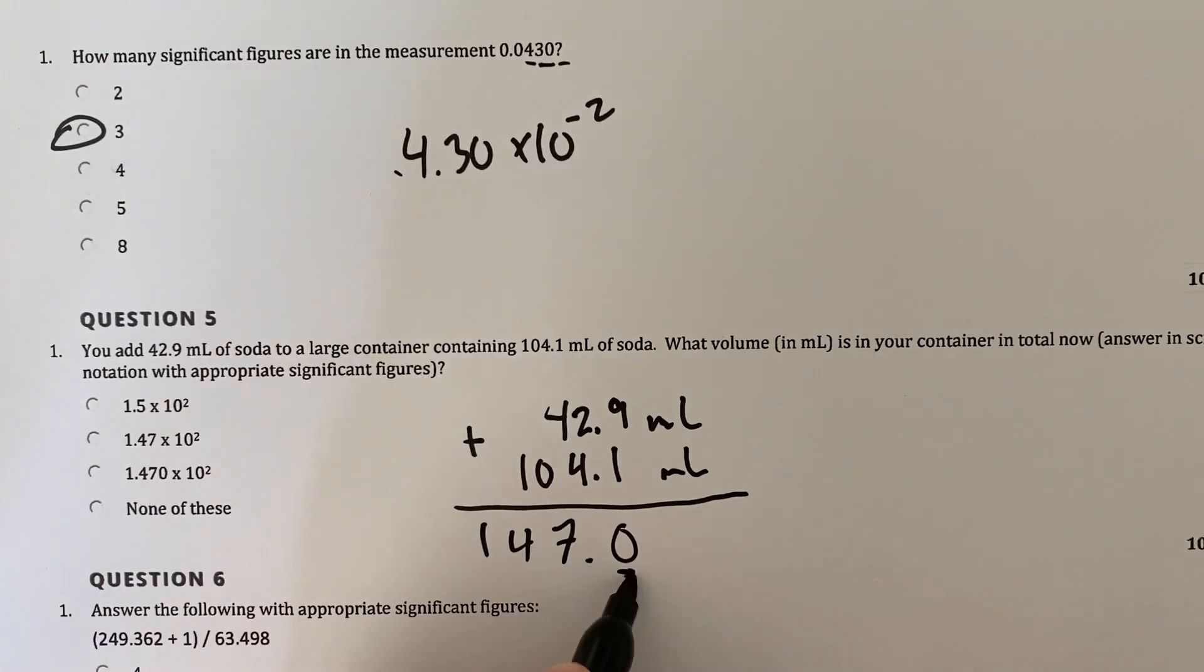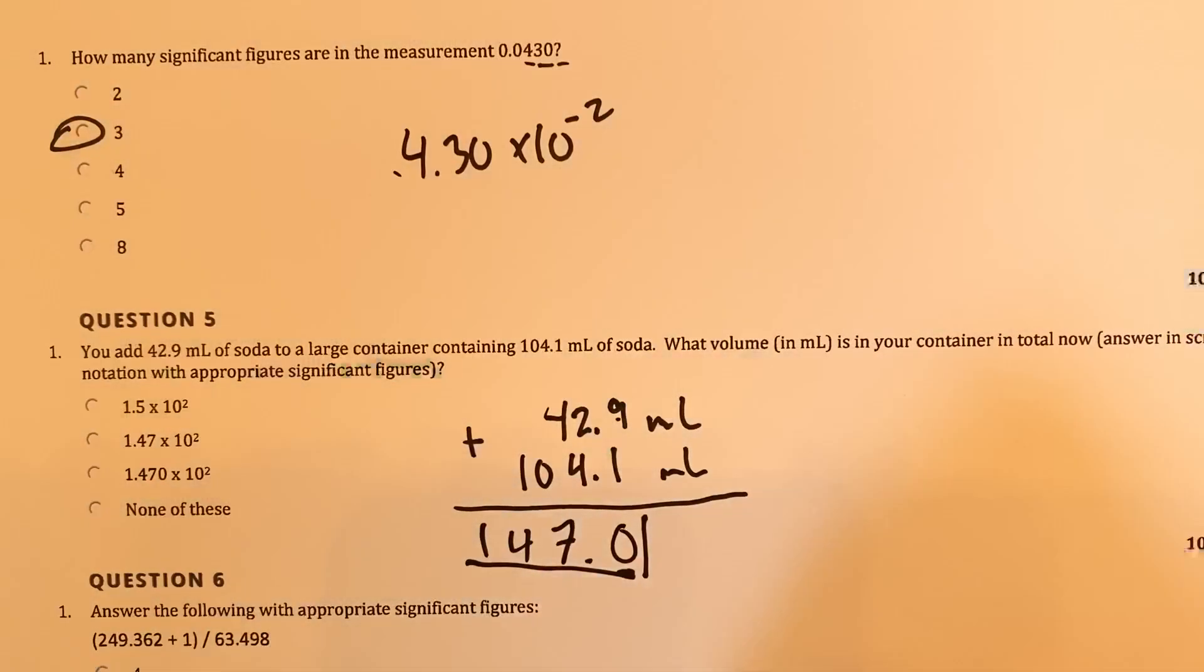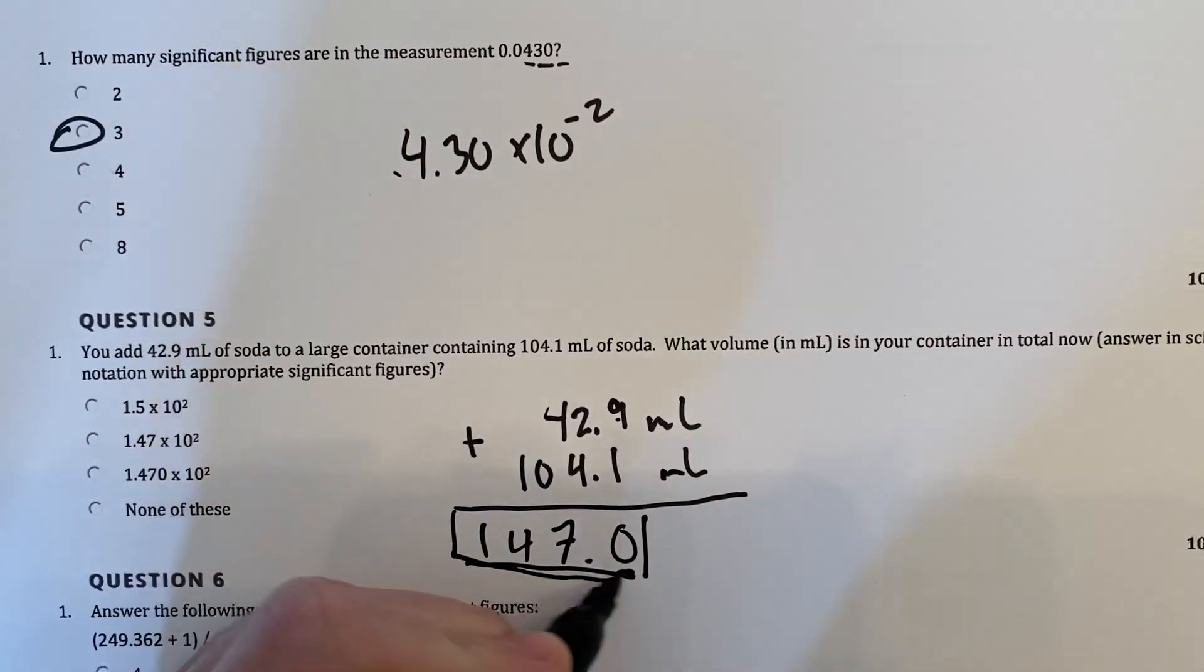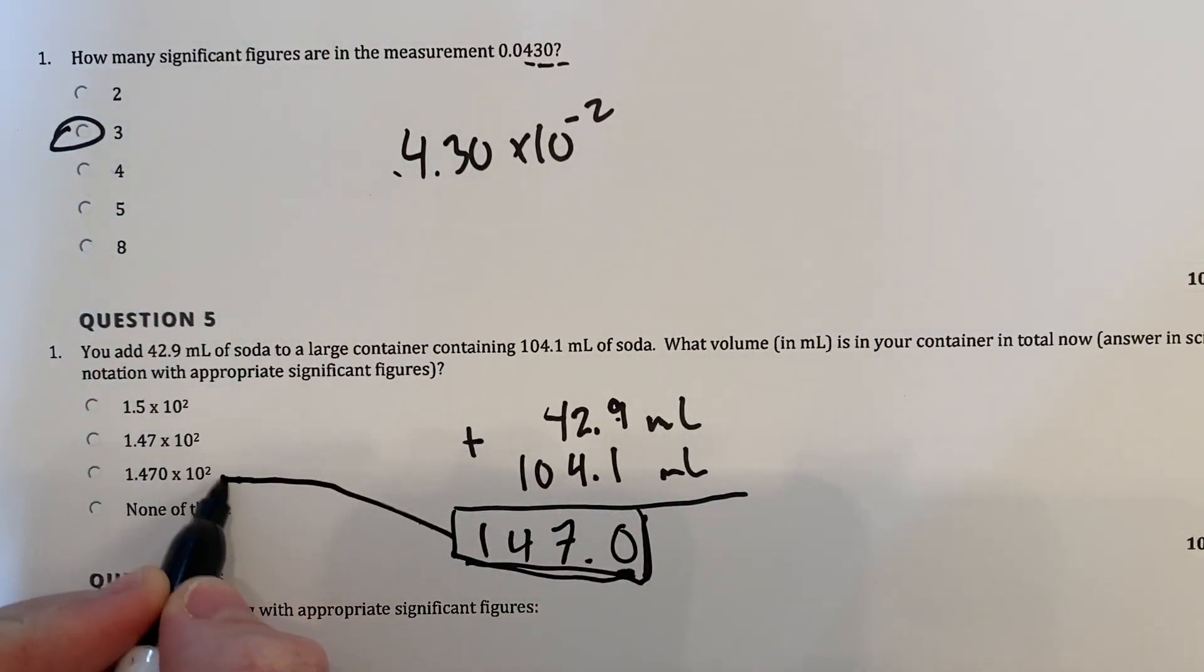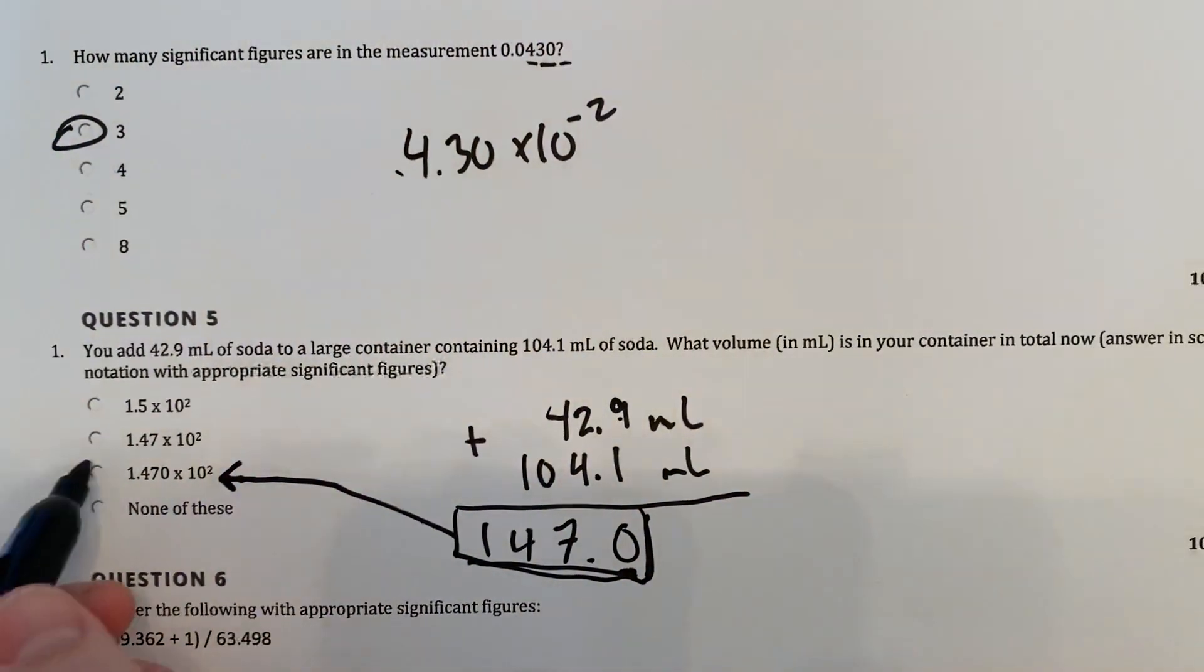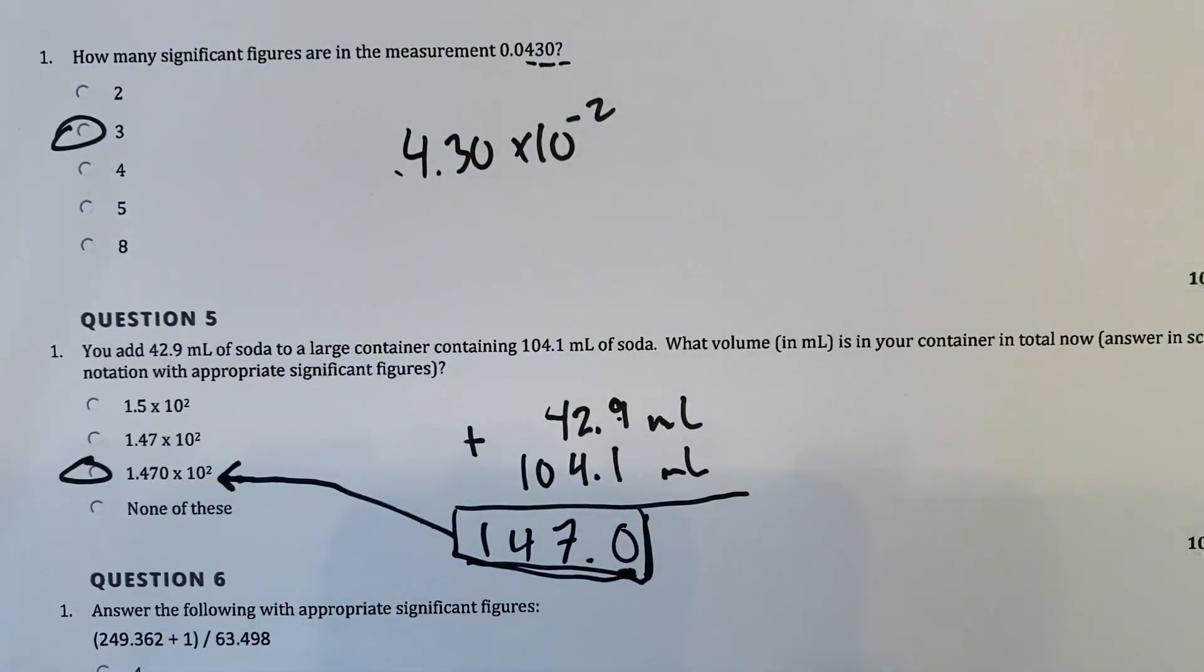Again, you're looking at precision here. So we know this to the tenths place, we know this to the tenths place, and therefore that answer, therefore that answer we should also know to the tenths place. When we put this number in scientific notation, we get that. 1.470 times 10 to the 2.